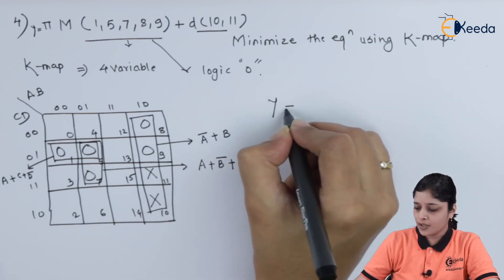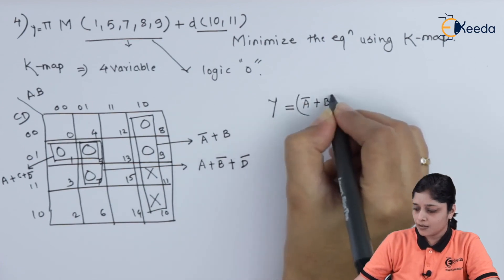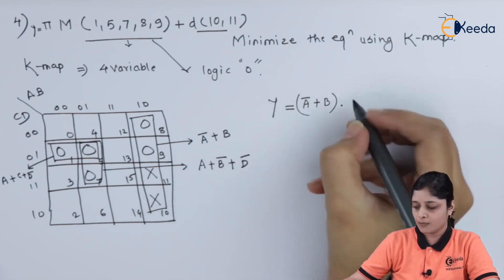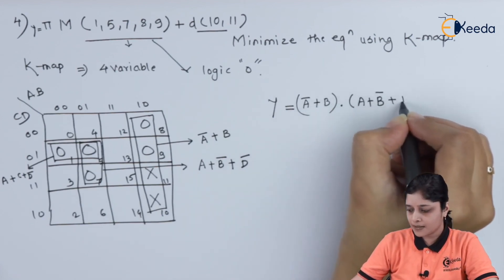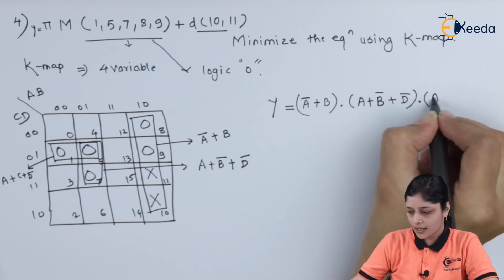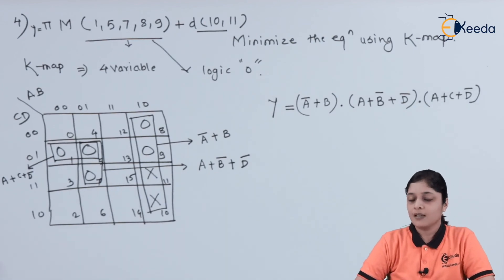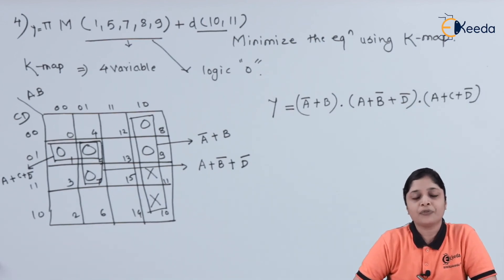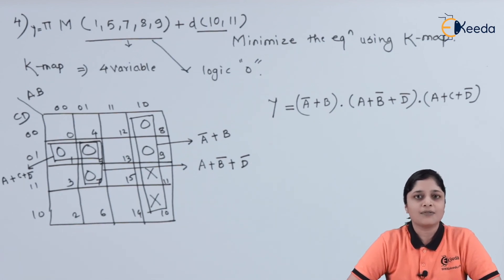So finally you write your answer: Y is equal to (a-bar plus b) dot (a plus b-bar plus d-bar) dot (a plus c plus d-bar). In this way you have to write your final answer when don't care conditions are present in the examples. This is all about the fourth example. Thank you for watching this video. Stay tuned with Ikeda and subscribe to Ikeda.